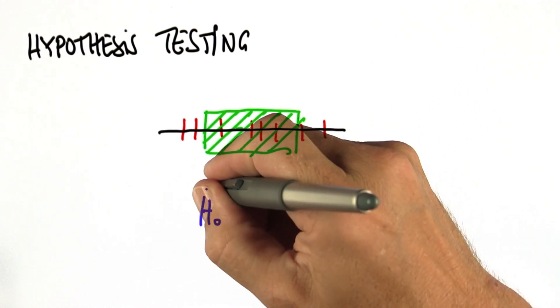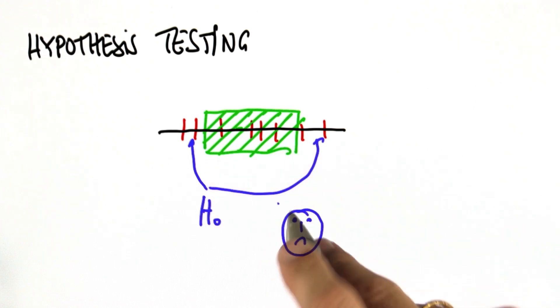Conversely, if your null hypothesis falls outside, you don't believe the null hypothesis and you accept the alternate hypothesis.